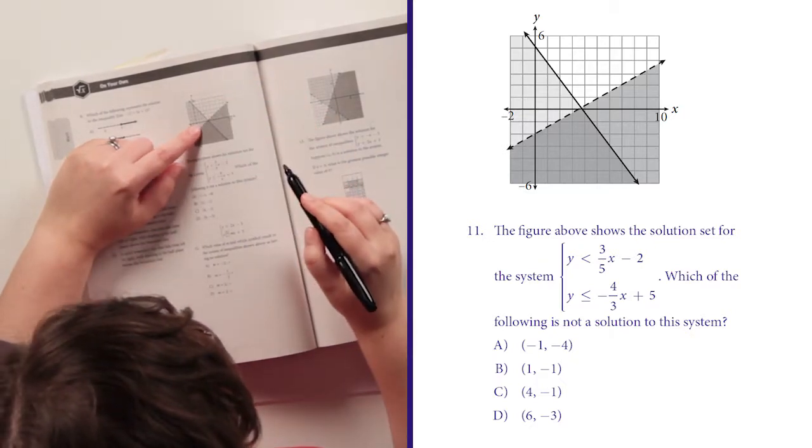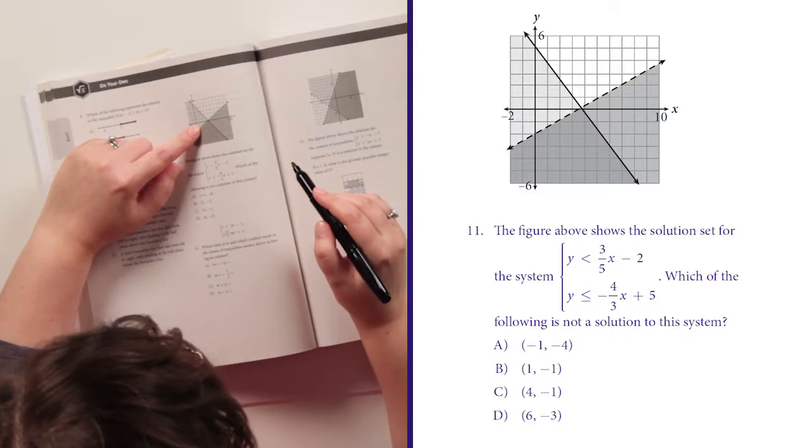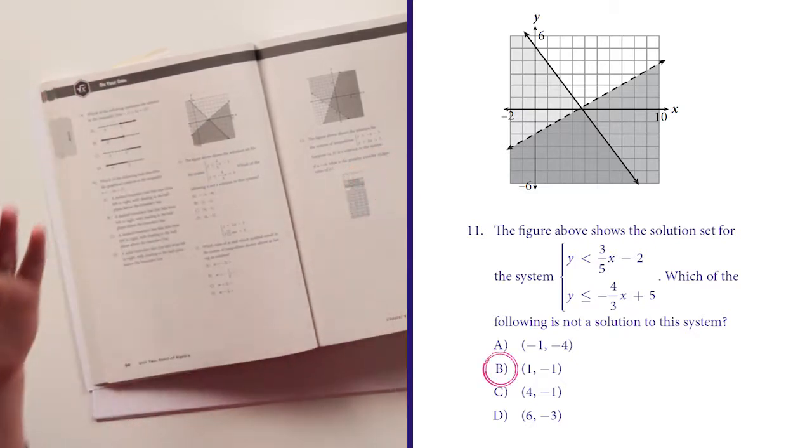So negative 1 over, my first answer choice, negative 4 up is going to edge in right there. 1 over and negative 1 up is actually right outside my zone. So B is not fitting here. All right, let's see what I'm doing next. Page 83, number 6.